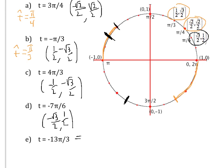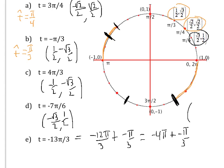For t = −13π/3, break it up as −12π/3 + (−π/3), which equals −4π + (−π/3). Since −4π is two full clockwise rotations, you end up in the fourth quadrant at the same position as −π/3. The reference number is π/3, and the coordinates are (1/2, −√3/2).